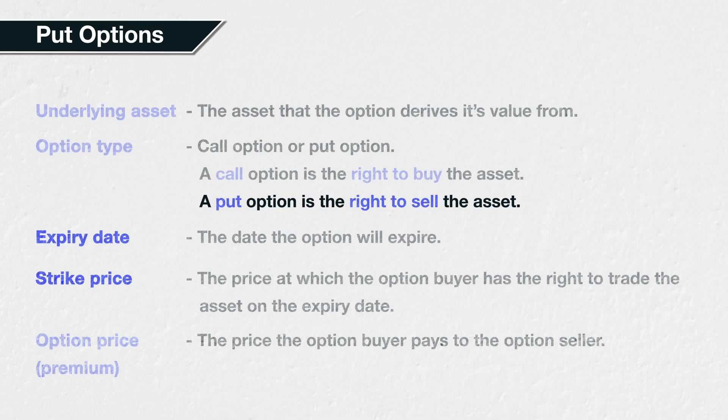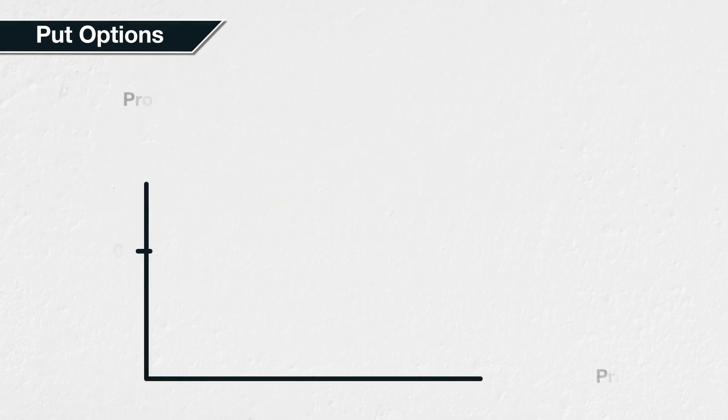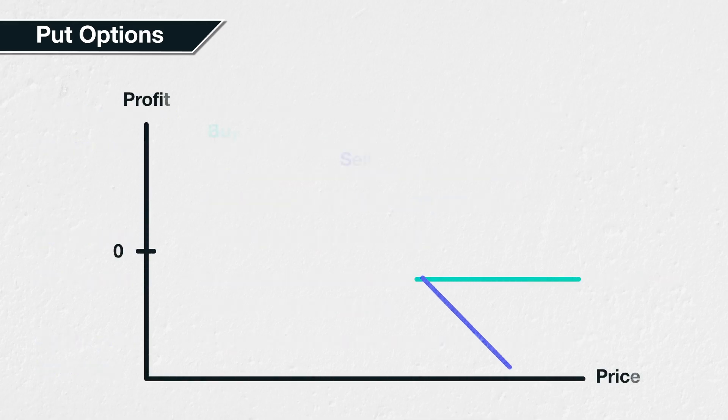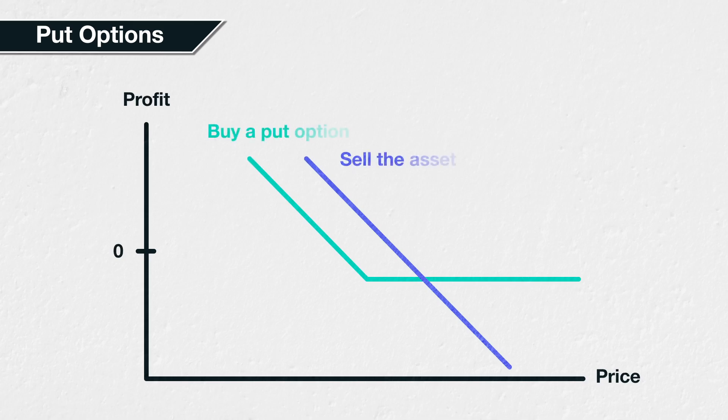On the other hand, the seller of a put option makes a loss when the underlying price decreases, because they are obligated to buy the asset at the strike price. As a put option is the right to sell the asset, we will also look at how buying a put option compares to shorting or selling the asset itself.